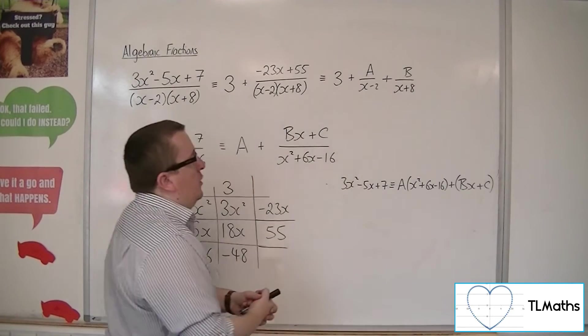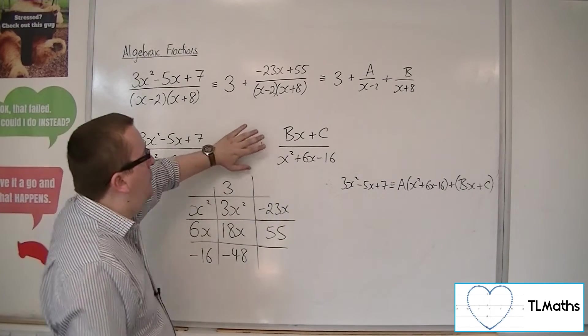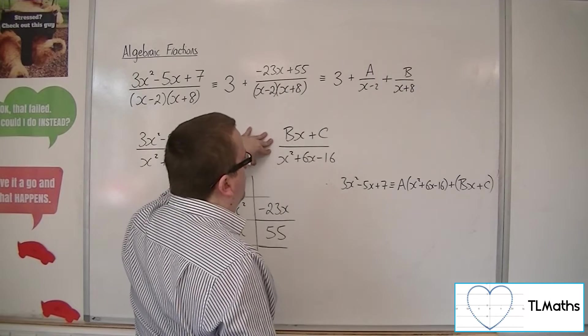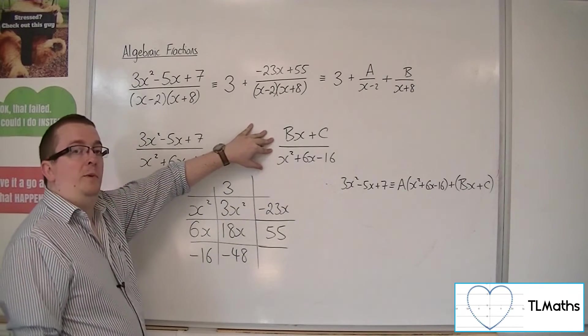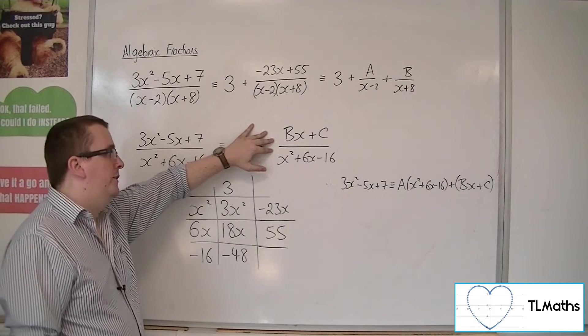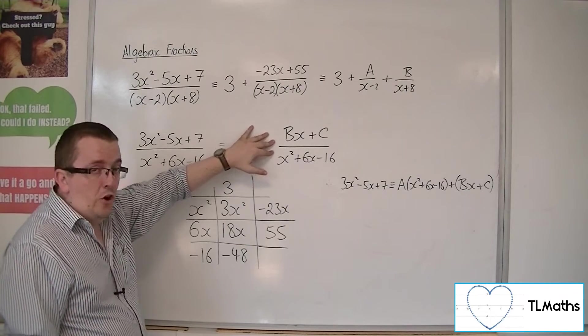Now, from that, once you've got your a, b, and c, you would still have to use partial fractions on the bx plus c over x squared plus 6x minus 16 part. So that's not ideal.